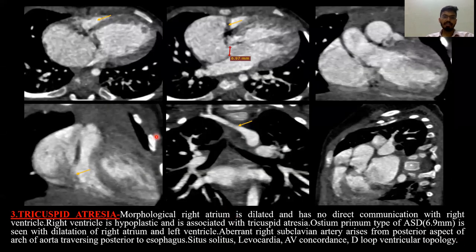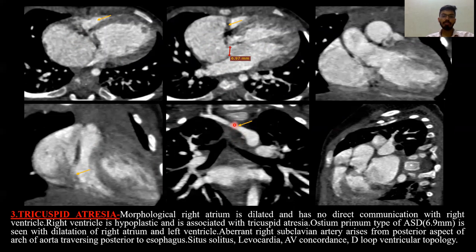The third case is tricuspid atresia. The morphological right atrium is dilated and has no direct communication with the right ventricle. The right ventricle is hypoplastic, associated with tricuspid atresia. We can also see an ostium primum type ASD with dilation of the right atrium and left ventricle. There is an aberrant right subclavian artery arising from the posterior aspect of the arch of aorta and passing posterior to the esophagus. By the Van Praagh system: situs solitus, levocardia, AV concordance, and D-loop ventricular topology.